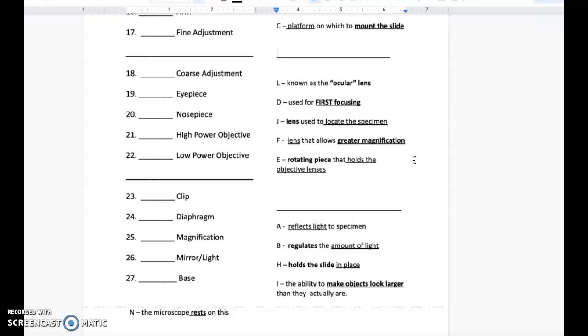Okay, the last section. The definition choices are: A: reflects light to specimen. B: regulates the amount of light. H: holds the slide in place. I: the ability to make objects look larger than they actually are.